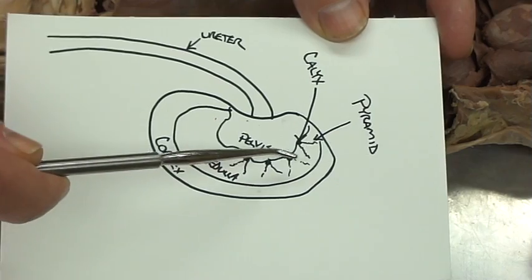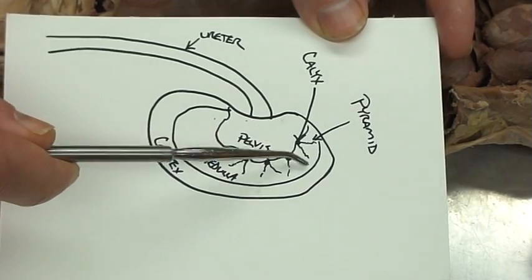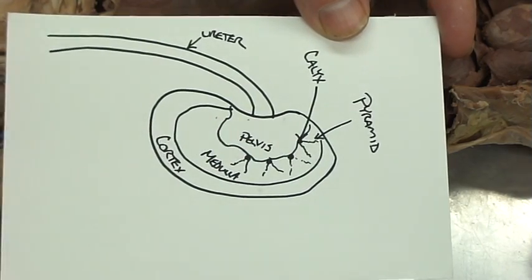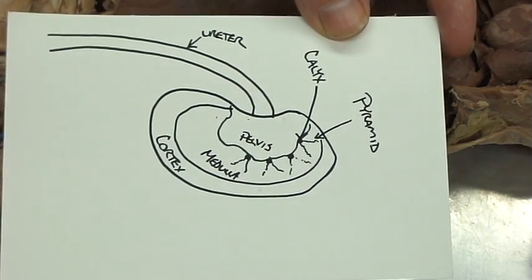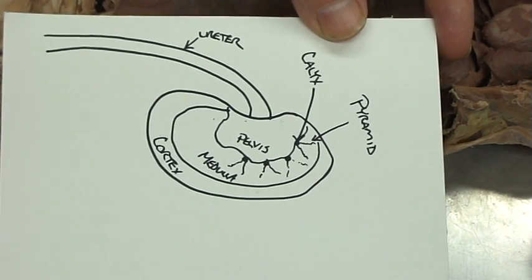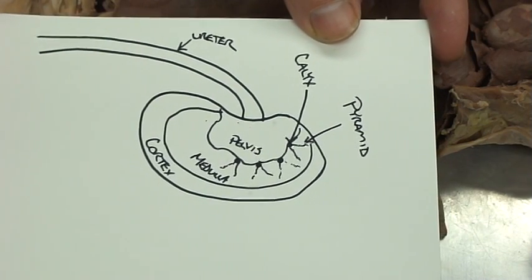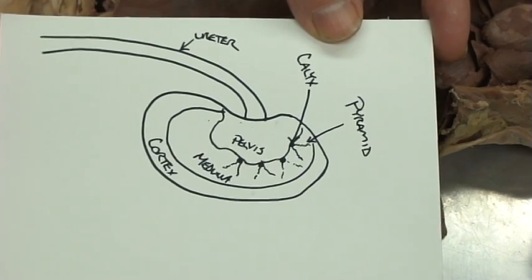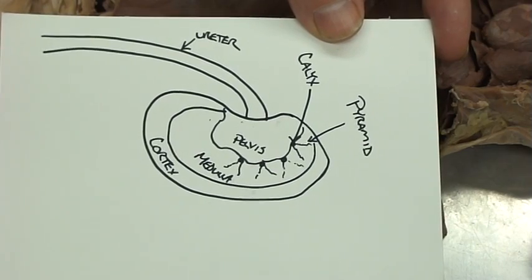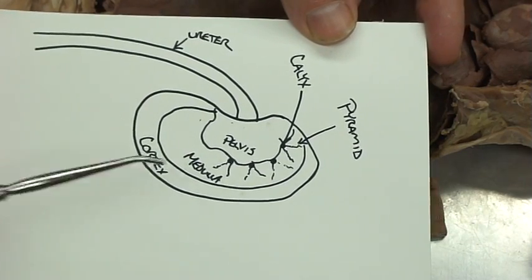The medulla is set up with a bunch of different cells inside called nephritia, and that's a pretty complex process by which it will filter out the urine, but we'll be taking a look at that in more depth in lecture.